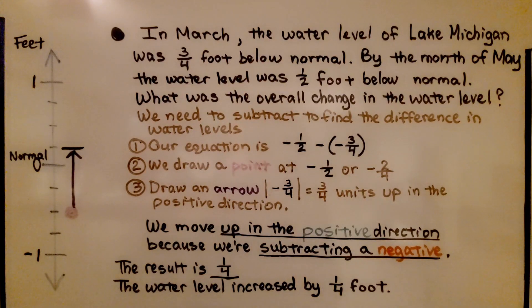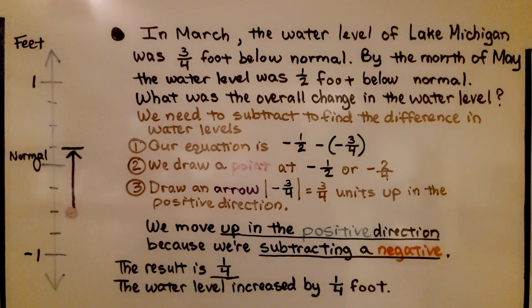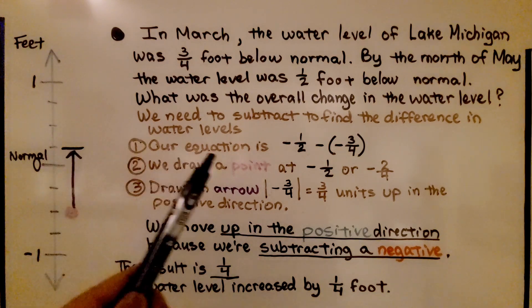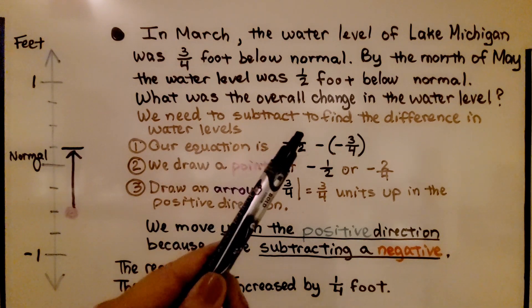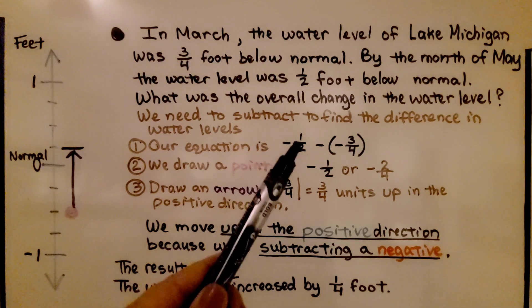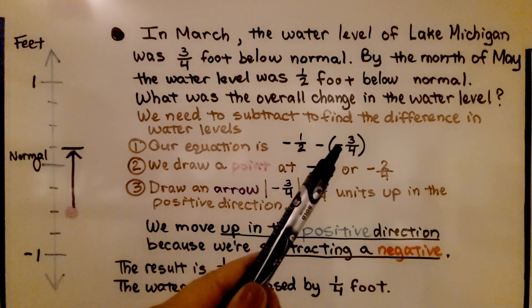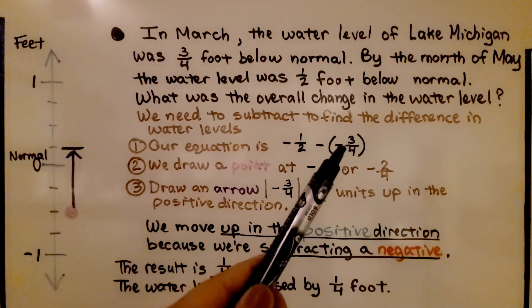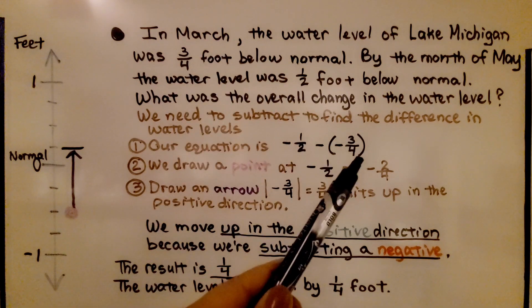Here's an example of a word problem. In March, the water level of Lake Michigan was 3 fourths foot below normal. By the month of May, the water level was 1 half foot below normal. What was the overall change in the water level? We need to subtract to find the difference in water levels. Our equation is going to be negative one half — which is May's level — minus negative 3 fourths, which is the initial March level, the earlier level.